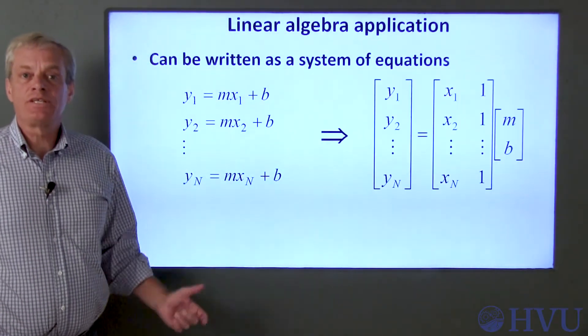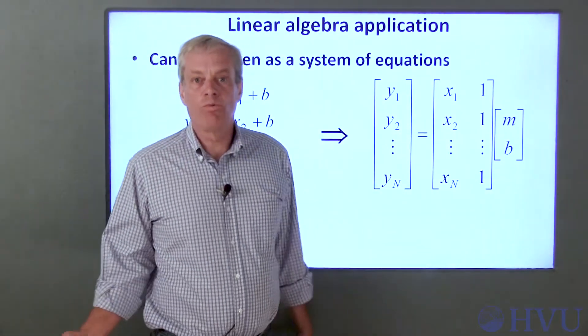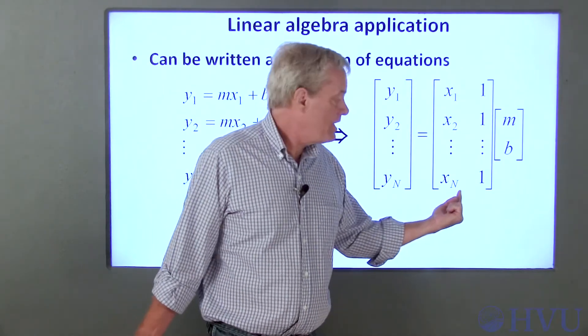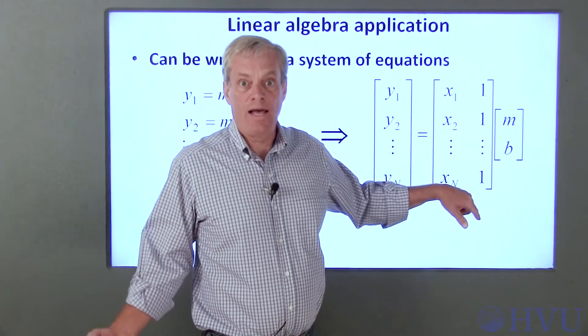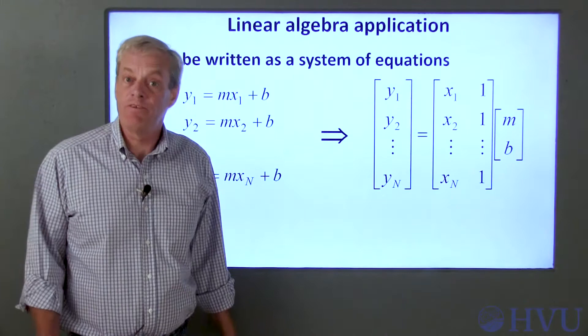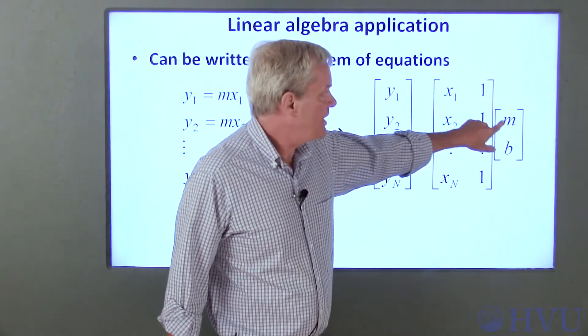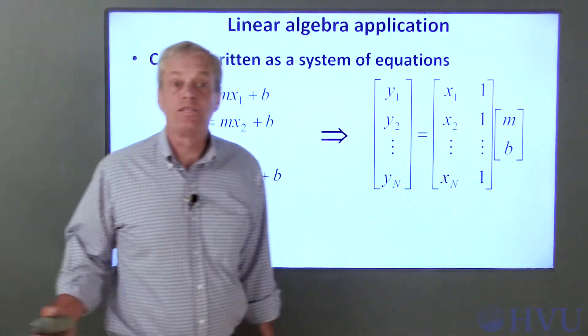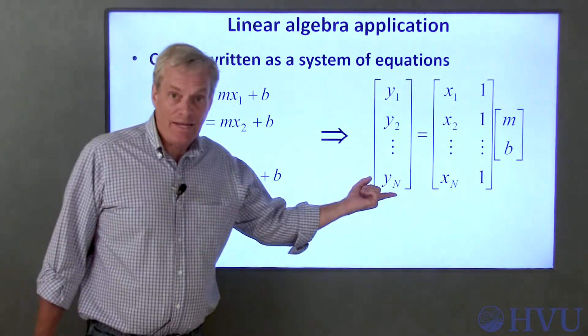This set of equations can be written in matrix form as shown here. A vector of Y values is equal to a matrix with a first column that is the X values and a second column that's all 1s. This matrix is multiplied by a vector containing the slope and the Y intercept of the straight line we're trying to fit to the data. So, Y1 is equal to X1 times M plus B, Y2 is X2 times M plus B, and so on. Now we have a system of equations of the form AX is equal to B.